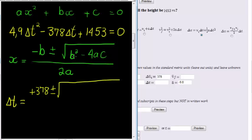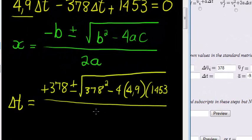And inside the square root, I have b squared. So 378 squared minus 4 times a, which is the coefficient of the square term, is 4.9. C is this last term, 1453, and all of that is divided by 2 times a. 2 times a is 2 times 4.9, so that's just the 9.8 again. And now we solve this using our calculator.